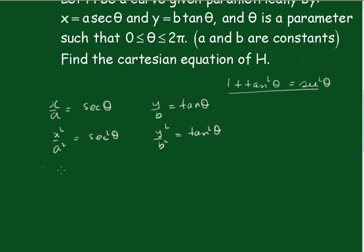We'll have 1 plus y squared on b squared equals x squared over a squared. That's probably a more symmetrical way of writing that. Take this across the other side and we'll get x squared on a squared minus y squared on b squared equals 1.